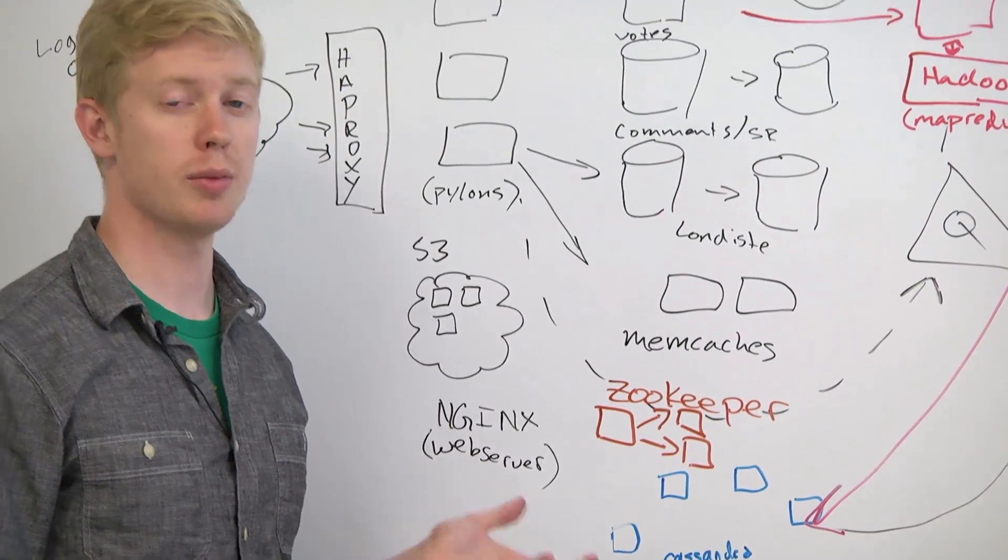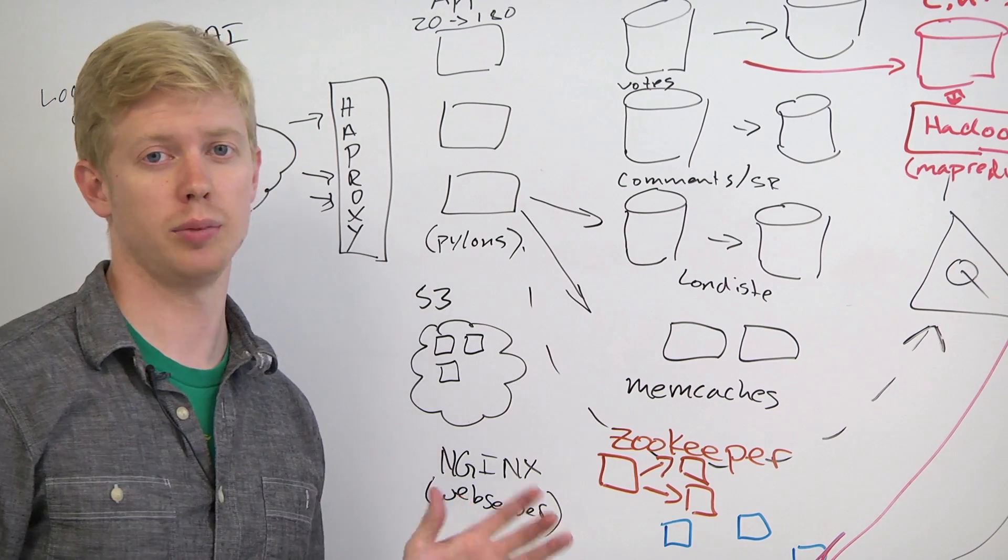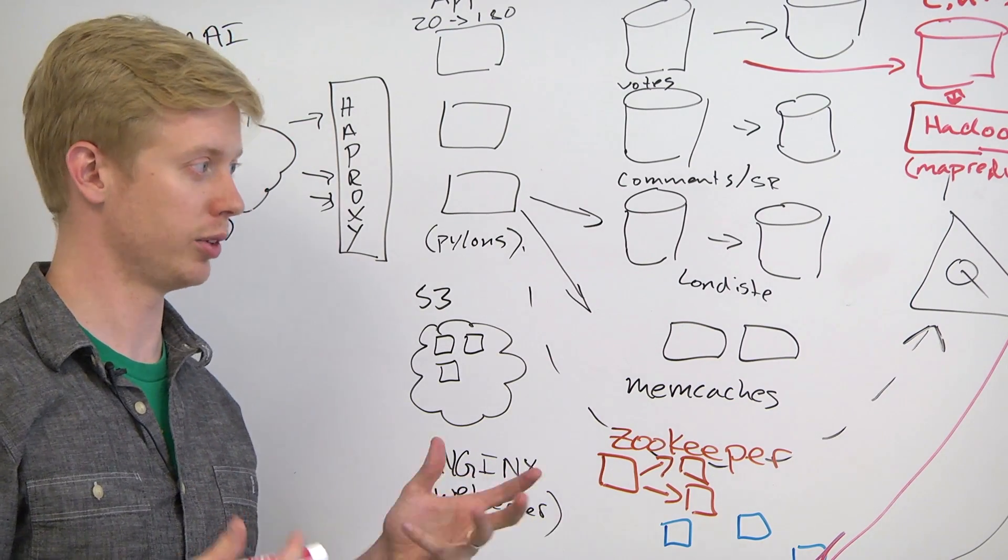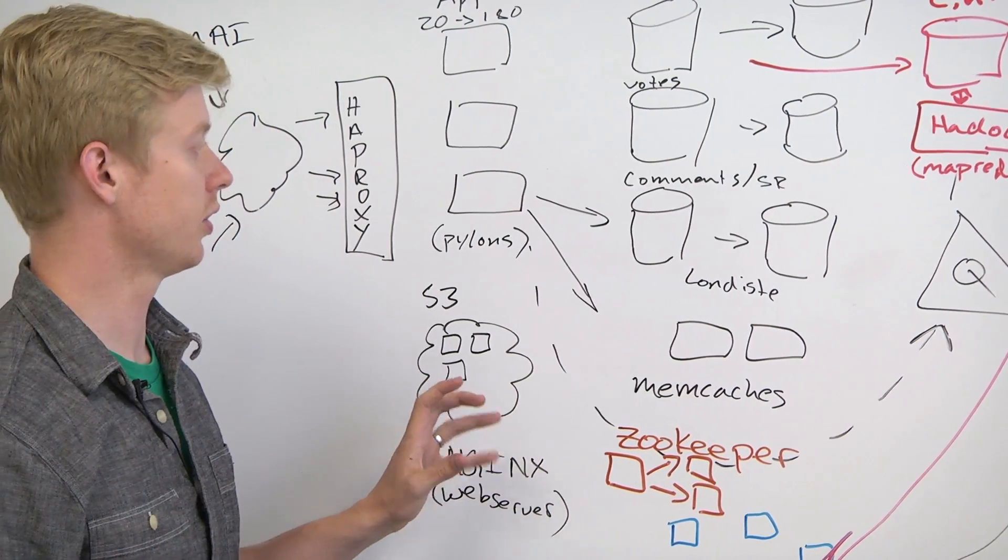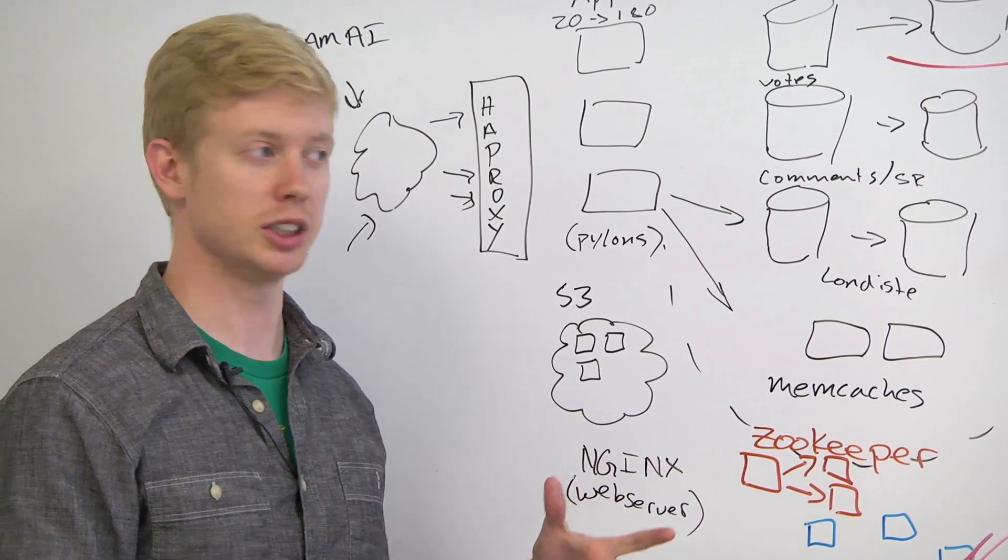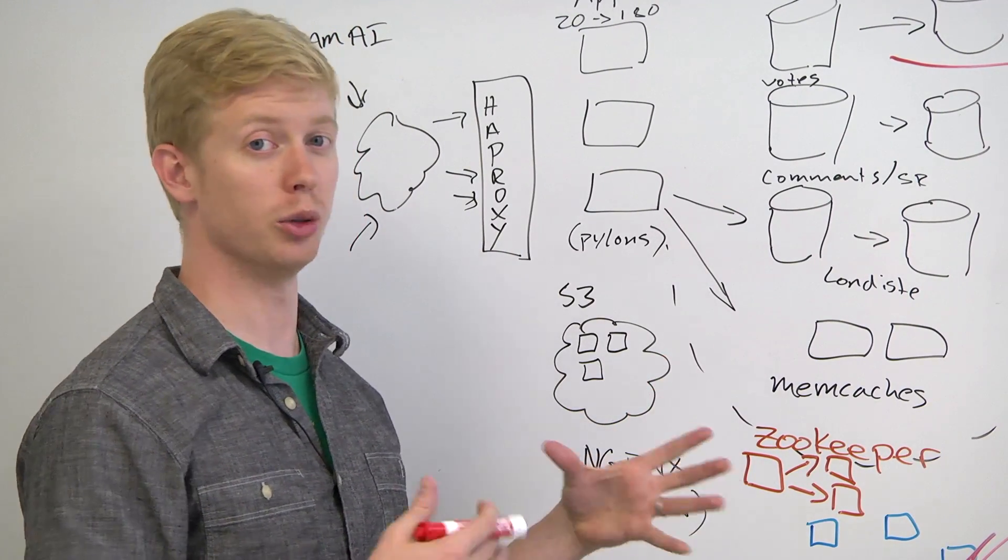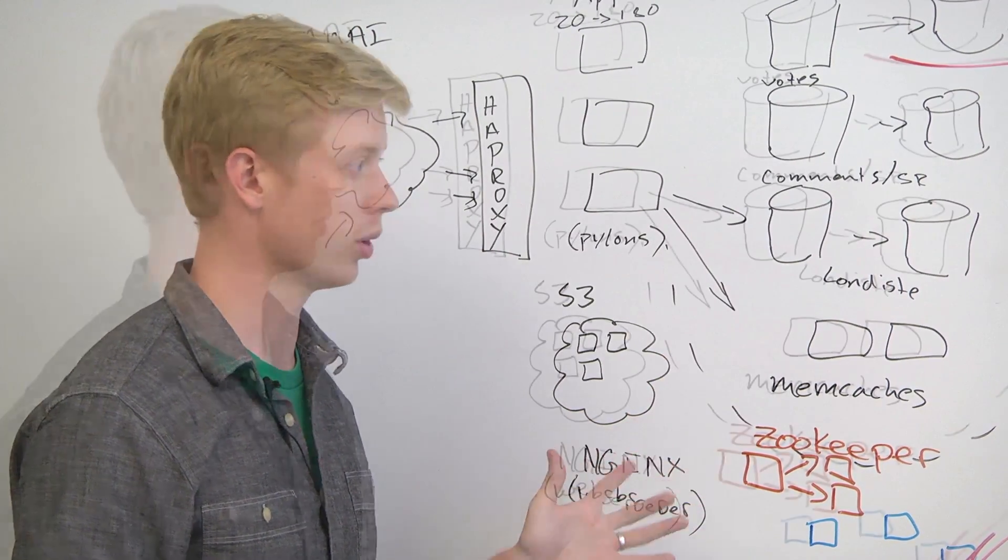So one of the cool things about Amazon—we talked previously in this lecture about AWS, the Amazon Web Services—is Amazon has built in not just machines, but these whole Hadoop clusters that you can commission and pay for.